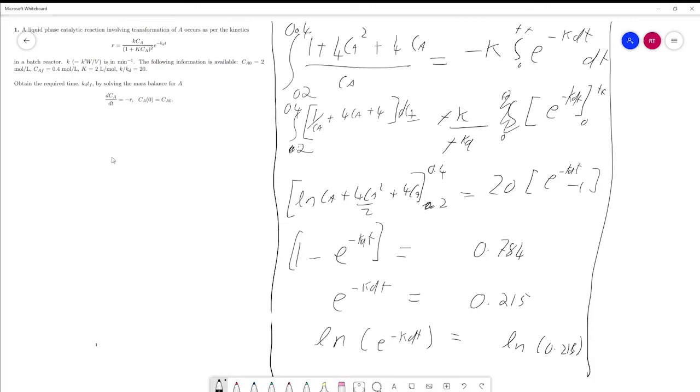Continuing on, what you will get is KDT equals 1.5345. That means the required time will be 1.5345.